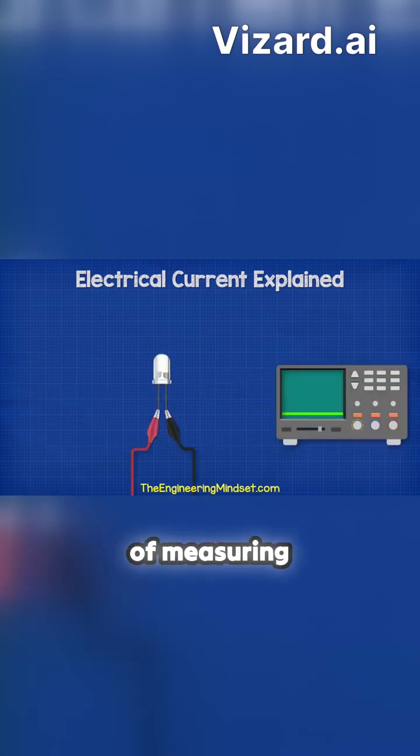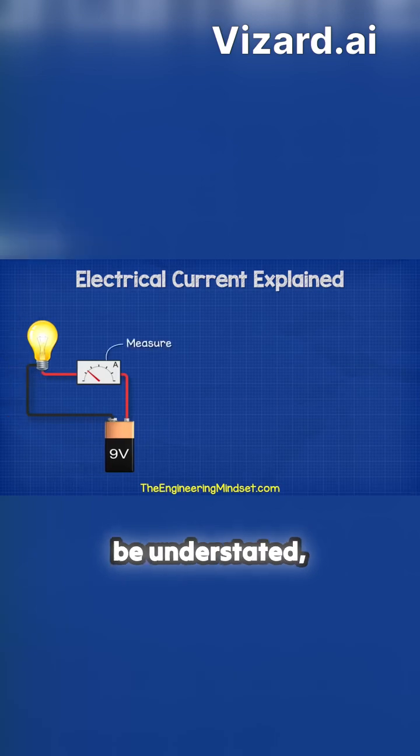The significance of measuring current with an ammeter cannot be understated. It assesses the capacity of cables and circuits, which is crucial for preventing electrical overloads.